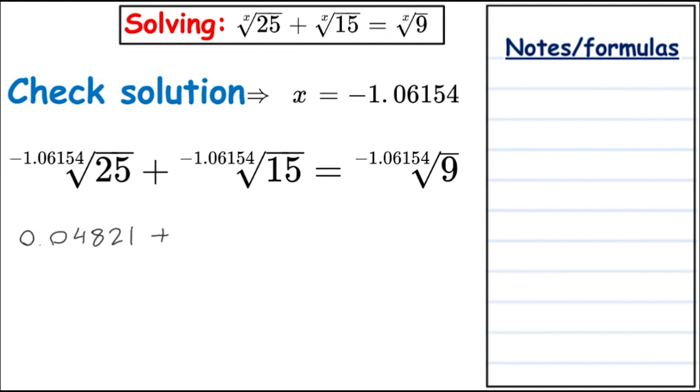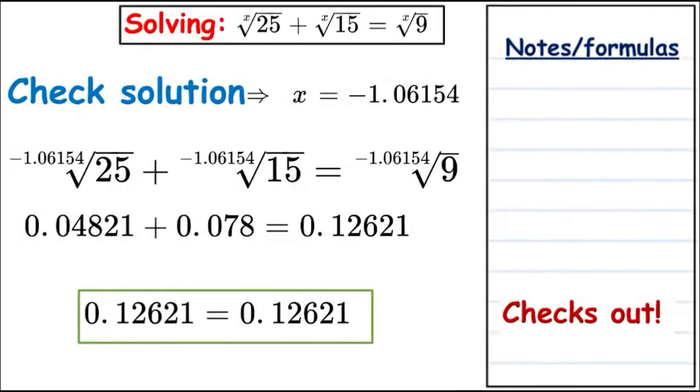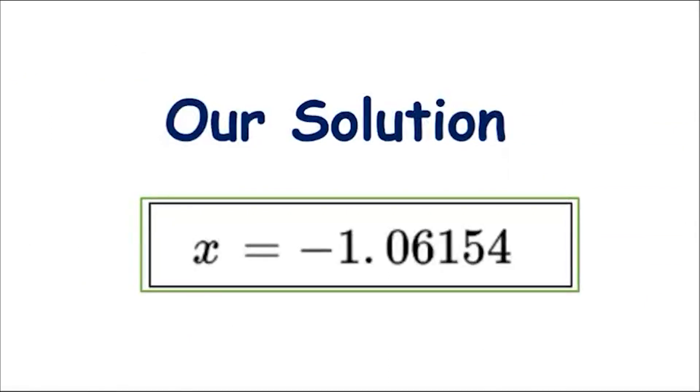Now let's apply the power of minus 1.06154 to 15 - remember it's a root number so it'll be 1 over that value - and we get 0.078 rounded. On the other side, we're going to apply that root to 9 and we will get 0.12621. So it checks out on either side and therefore it's correct. There it is: x is equal to minus 1.06154, and that's our solution to the radical equation.